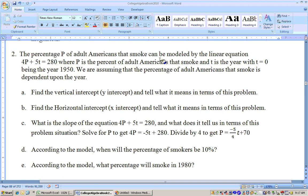Okay, on this problem, the percentage p of adult Americans that smoke can be modeled by this linear equation, where p is the percent of Americans that smoke, and t equals 0 is the year 1950. We're assuming that the percentage of Americans that smoke is dependent upon the year, so p is the dependent variable treated like y. Therefore, t is always treated like x.